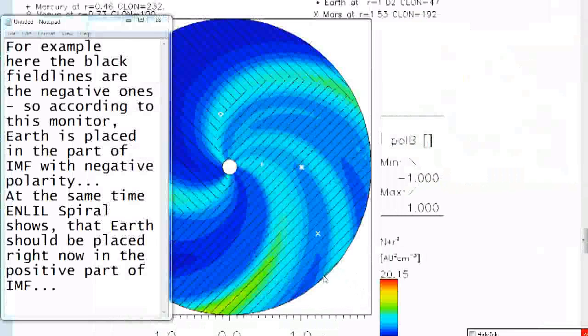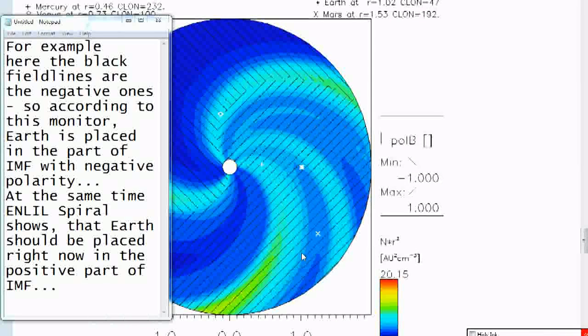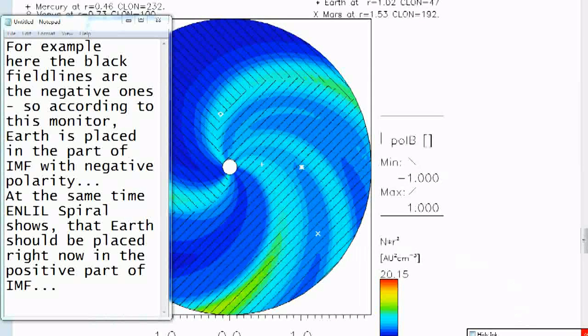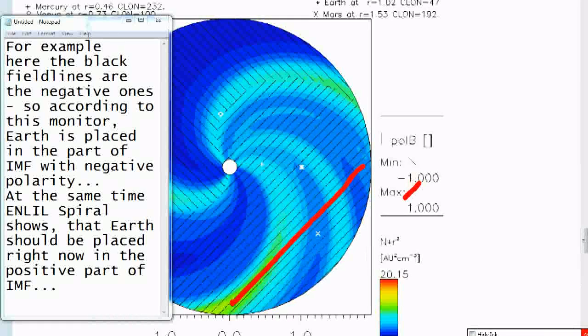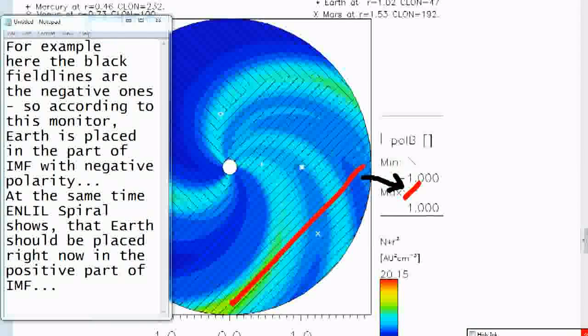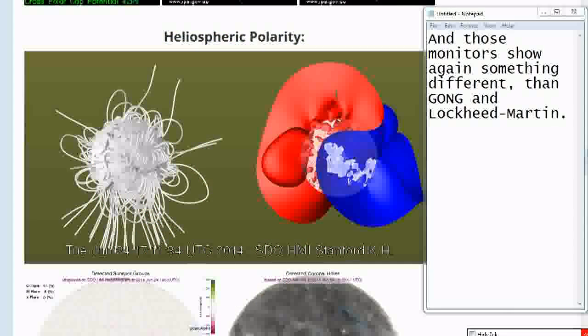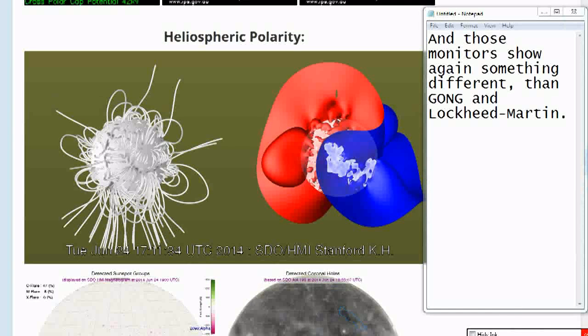At the same time, Parker spiral shows that Earth should be placed right now in the positive part of IMF.